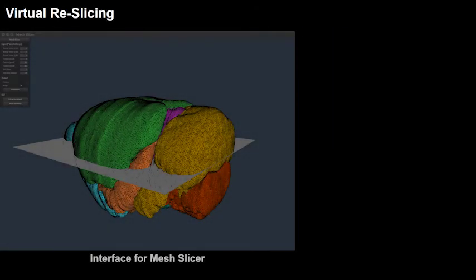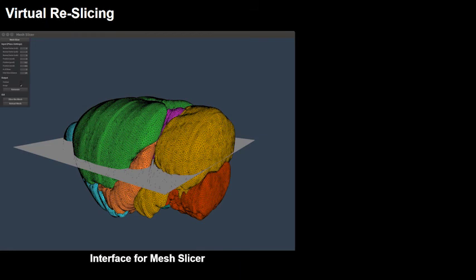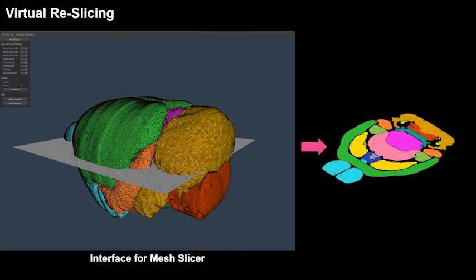This virtual mouse brain model can then be re-sliced at arbitrary orientations and slicing intervals to get a virtual slice. These virtual slices and their corresponding microscopic slices are then aligned using feature-based nonlinear registration.